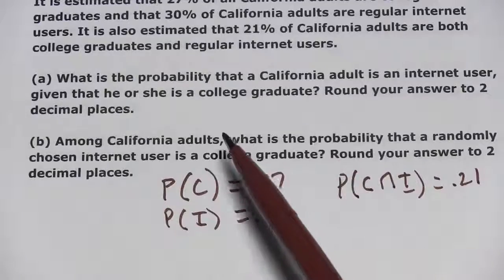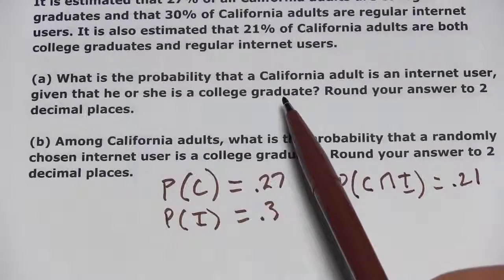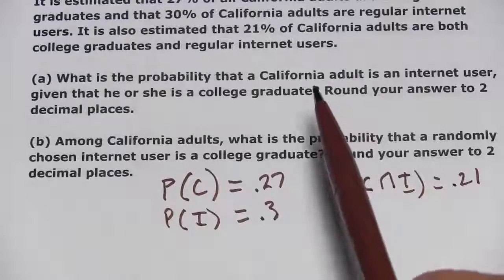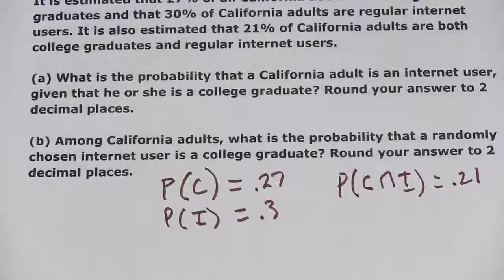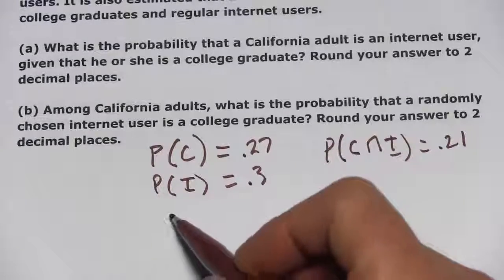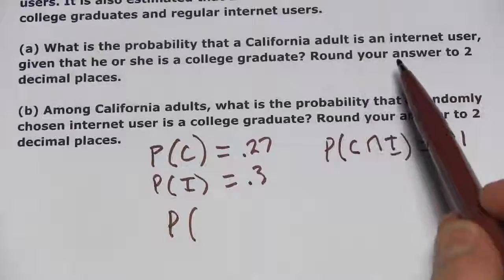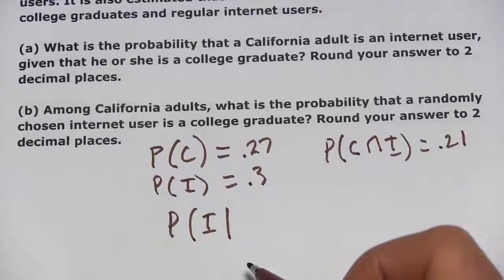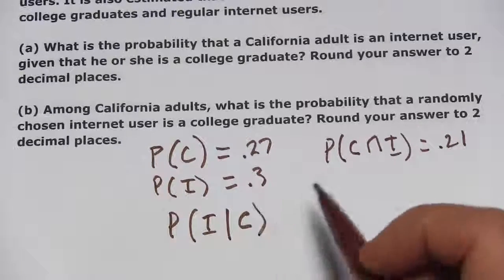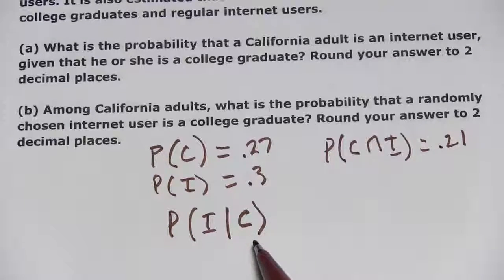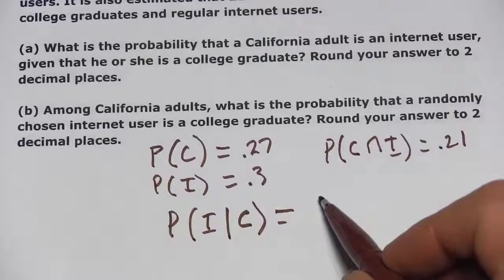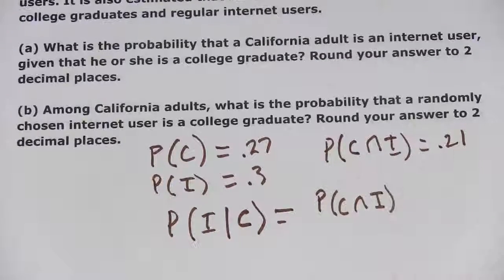So we have the basics of what we need for this problem. Now the first question says: what is the probability that a California adult is an internet user given that he or she is a college graduate? When you have a problem like that, asking the probability of something when something else is given, we write it as the probability of being an internet user given that he or she is a college graduate. The formula for something given something else is the probability of the intersection of the two things divided by the probability of the given.